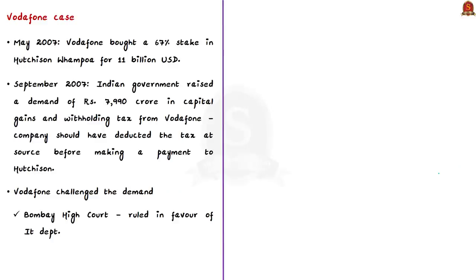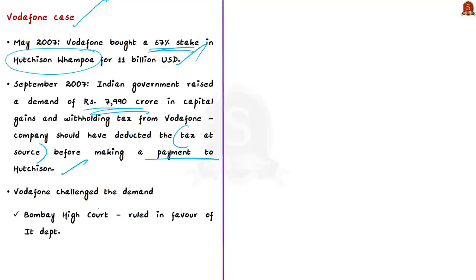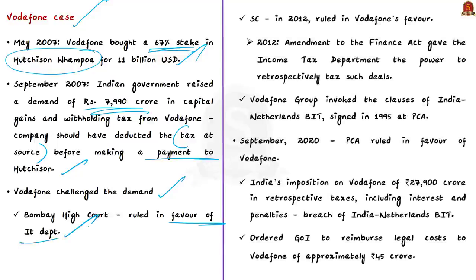The first case was between Vodafone and the Indian government. In May 2007, Vodafone bought a 67% stake in Hutchison Wampoa, a Hong Kong company, for $11 billion. The Indian government then raised a demand of around 8,000 crore rupees in capital gains and withholding tax, saying Vodafone should have deducted tax at source before paying Hutchison. Vodafone challenged this in Bombay High Court, which ruled in favor of the Income Tax Department. Vodafone then challenged in the Supreme Court, which in 2012 ruled in favor of Vodafone. But the then Finance Minister Pranab Mukherjee avoided the Supreme Court's ruling by proposing an amendment to the Finance Act giving the Income Tax Department power to retrospectively tax such deals, thus the onus to pay taxes fell back on Vodafone.